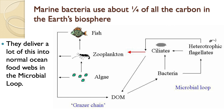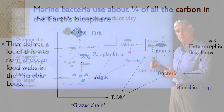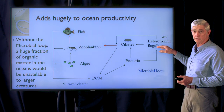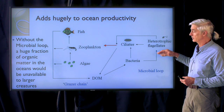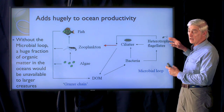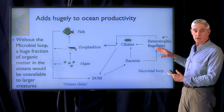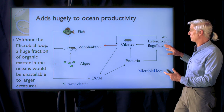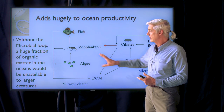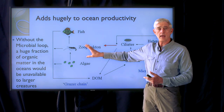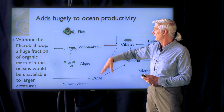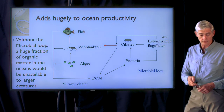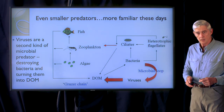So with these other steps along the way — the larger ciliates and flagellates — the added energy of the bacterial population can get added to the other part of the ocean food chain.